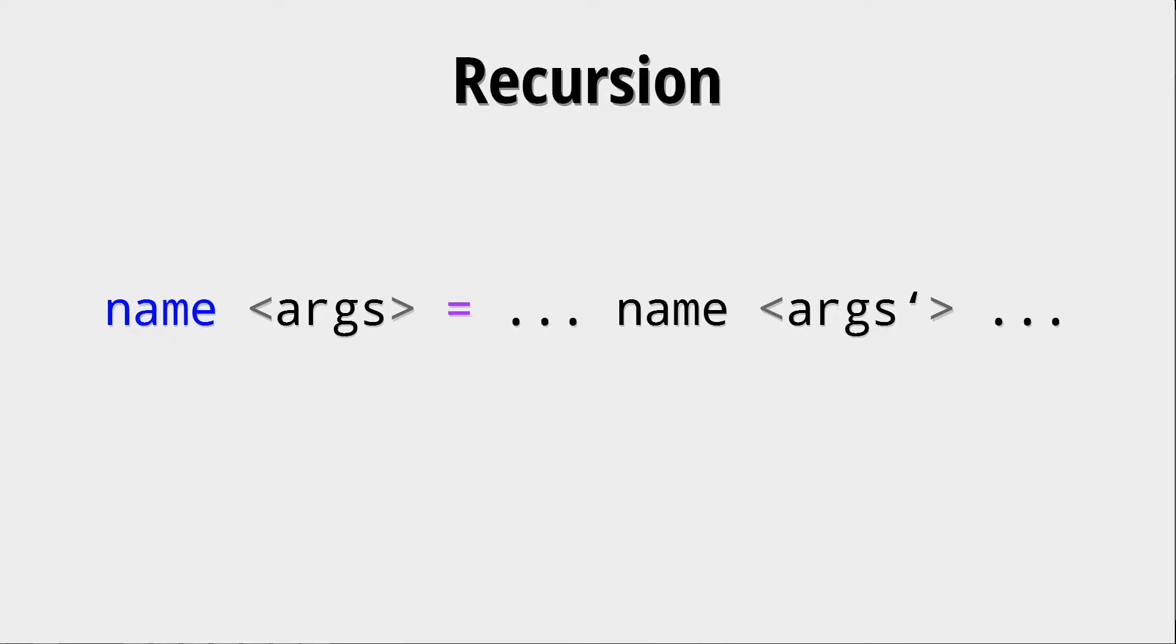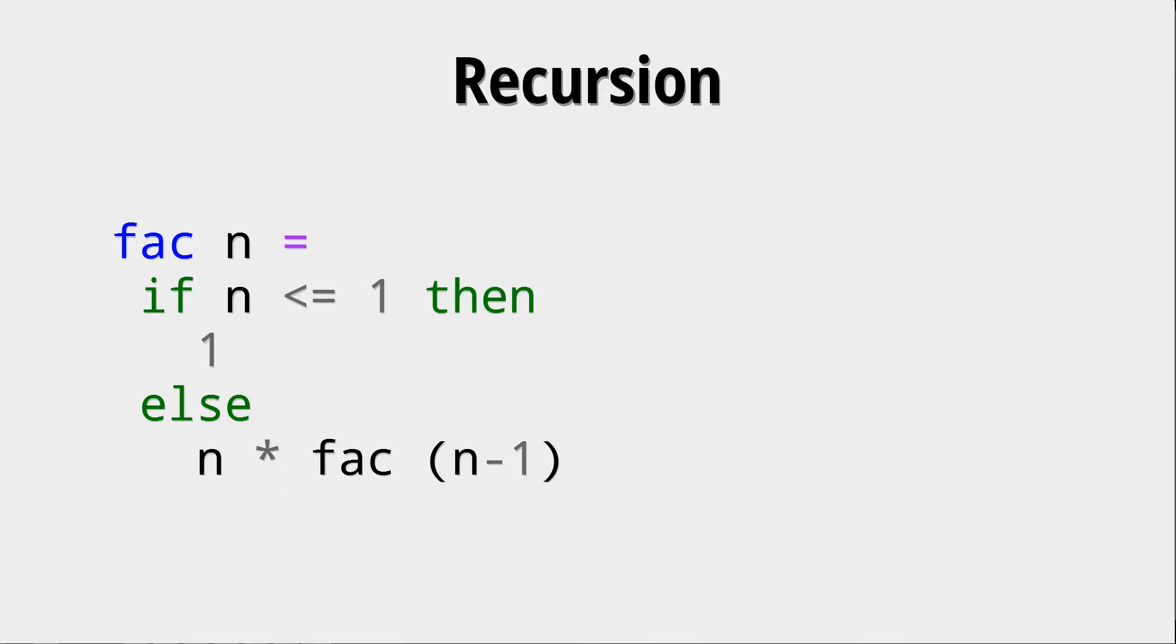So this is the basic boilerplate of how recursion looks like. Let's look at an example, the prime example for recursion which is the faculty function. Now in this case we say that the faculty of n smaller or equal to 1 should be 1, and otherwise we have this recursive call.